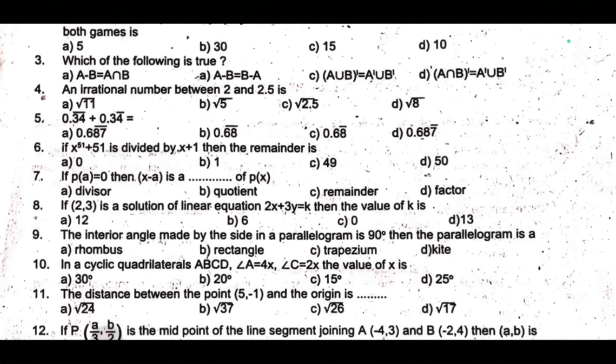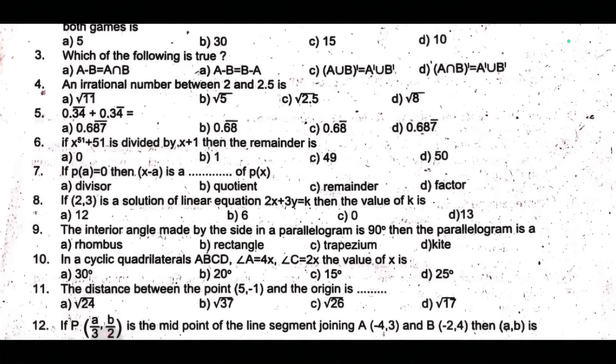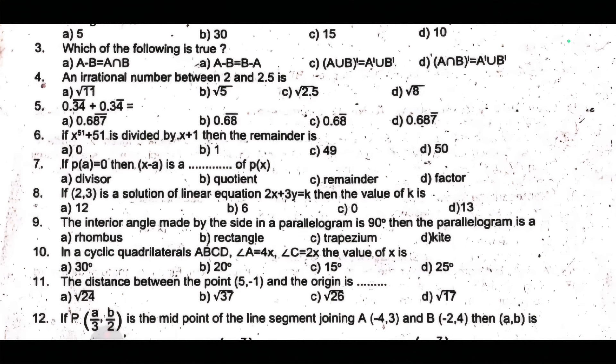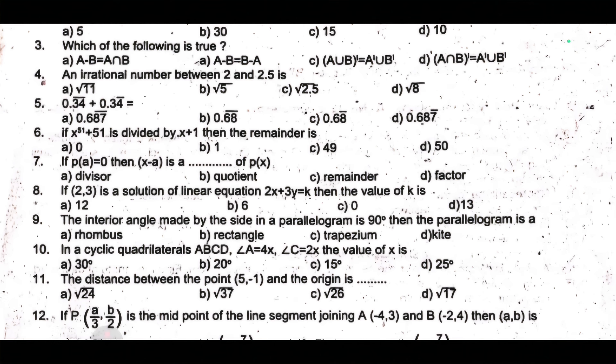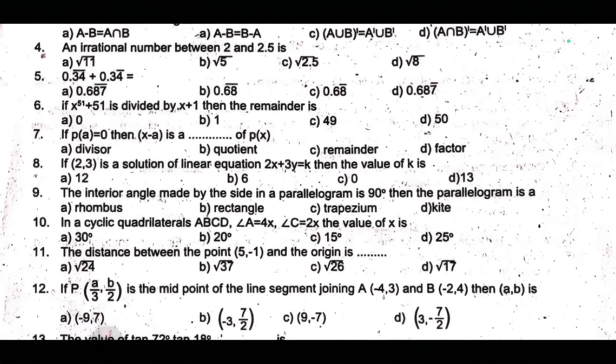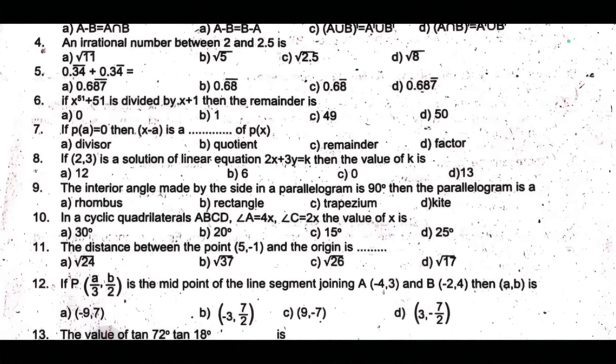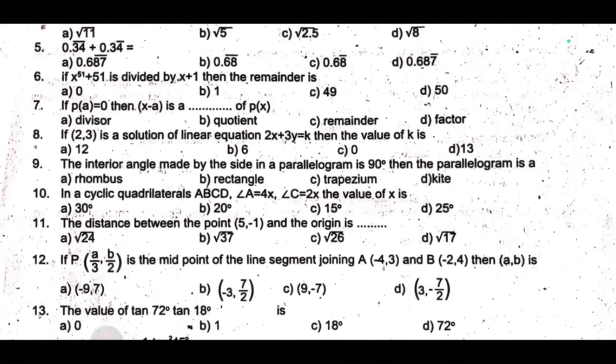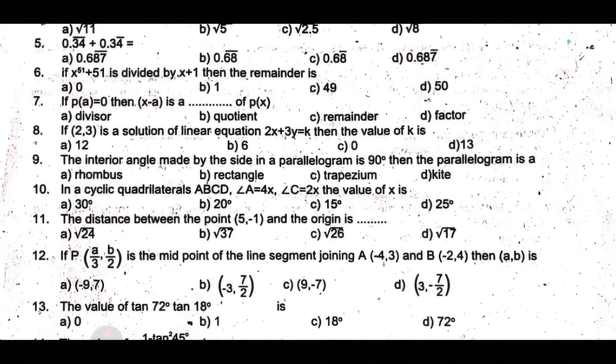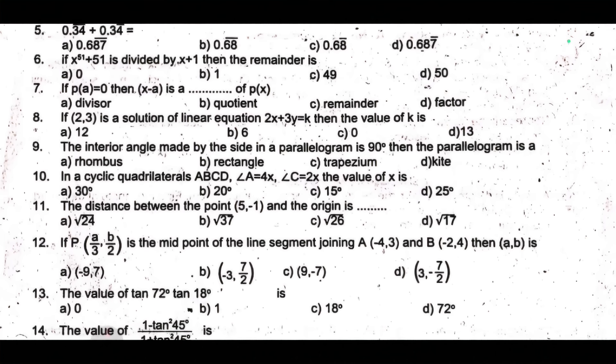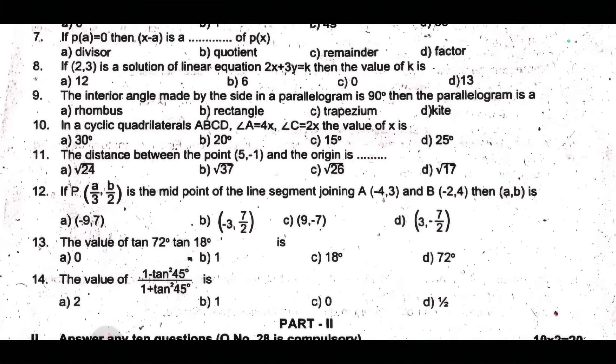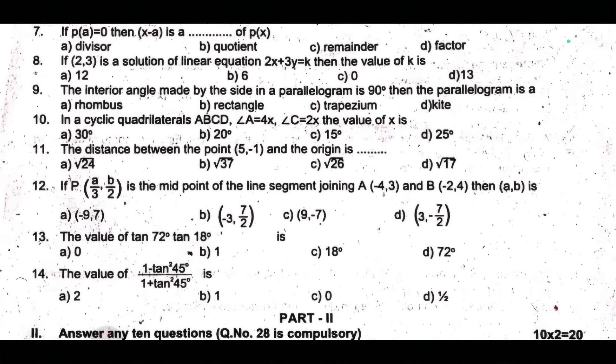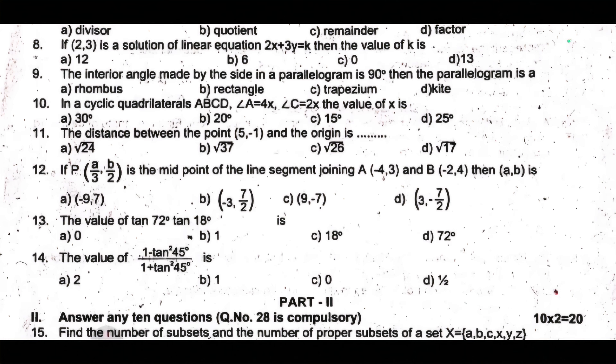Seventh one, if p of a equal to 0, then x minus a is a dash of p of x. Eighth one, if (2,3) is a solution of linear equation 2x plus 3y equal to k, then the value of k is dash. Ninth one, the interior angle made by the side in a parallelogram is 90 degree, then the parallelogram is dash. Tenth one, in a cyclic quadrilateral ABCD, angle A equal to 4x, angle C equal to 2x, the value of x is dash.